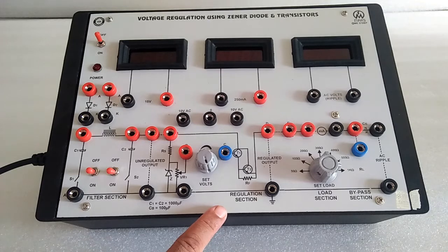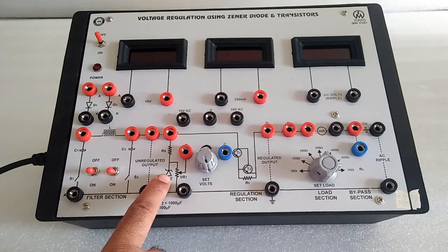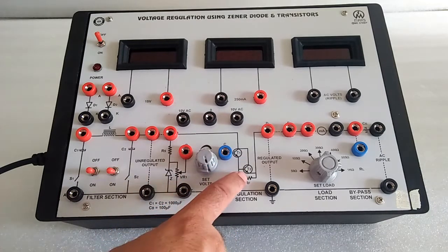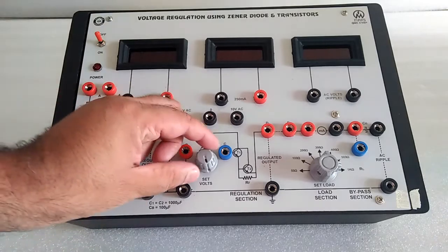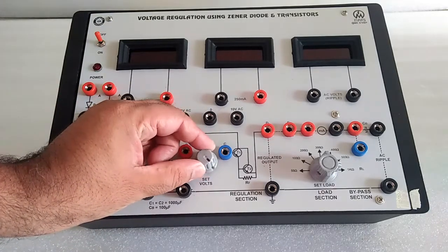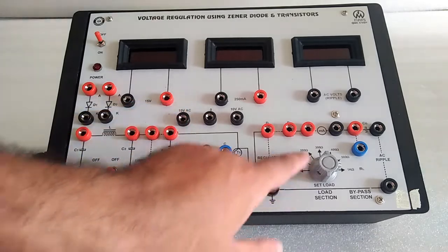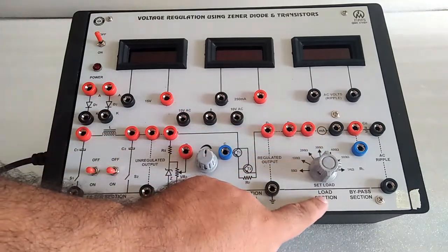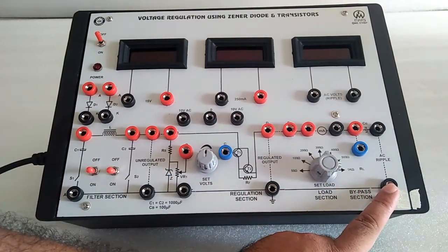This is the voltage regulation section using Zener diode and transistor. Here we can get regulated output, and we can also set the voltage with this potentiometer.